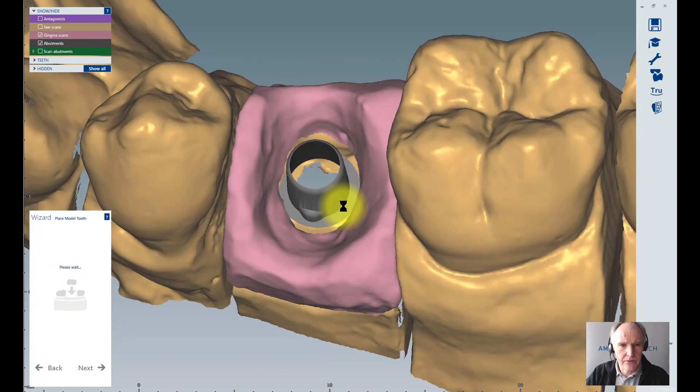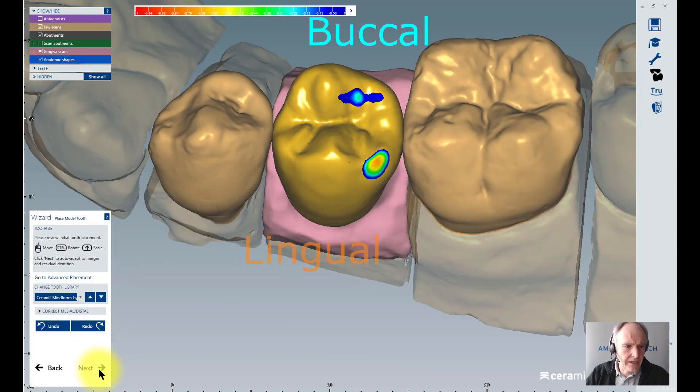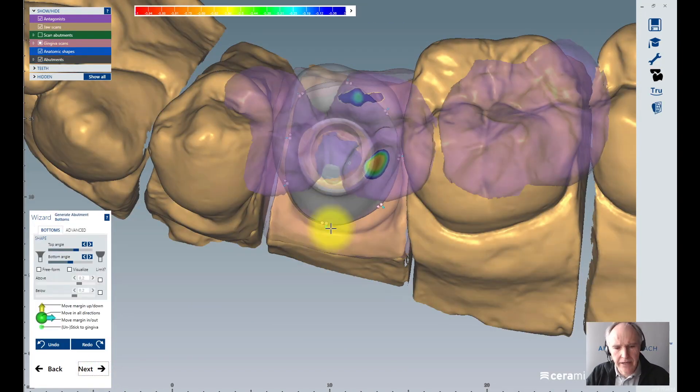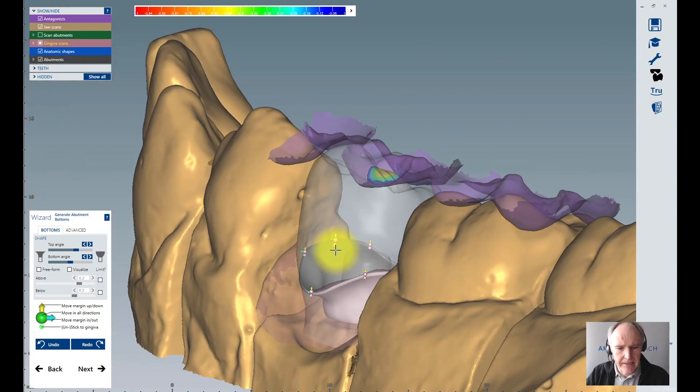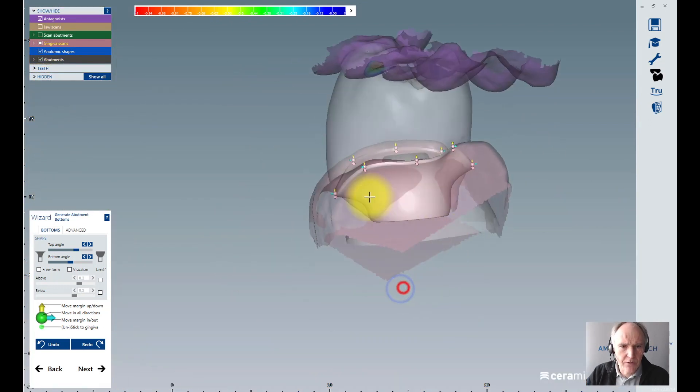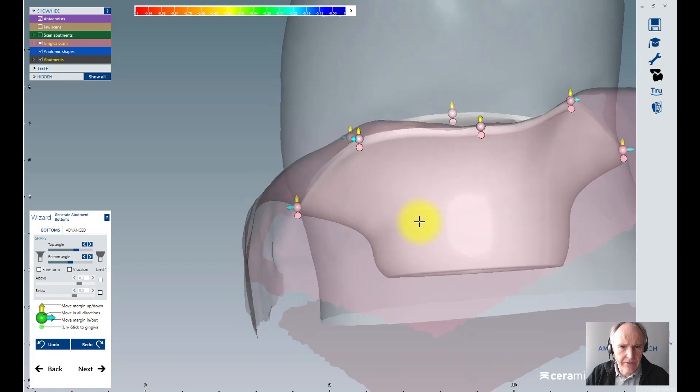We are going to place our library tooth. After positioning I click on next. Now I come to the point where I adjust the fitting between my emergence profile and my gingiva. Let's have a closer look.